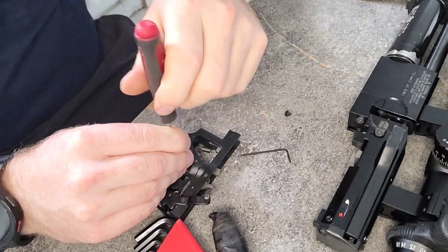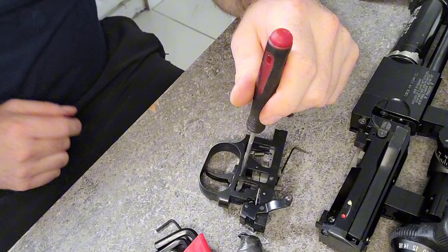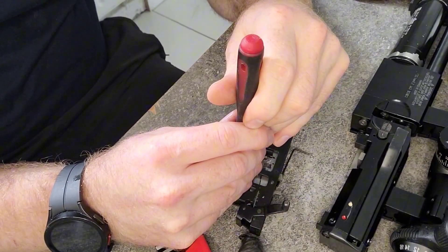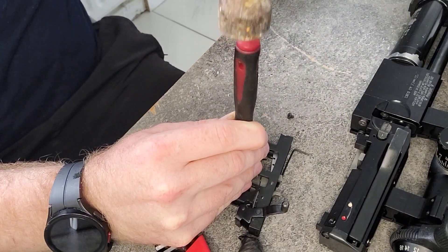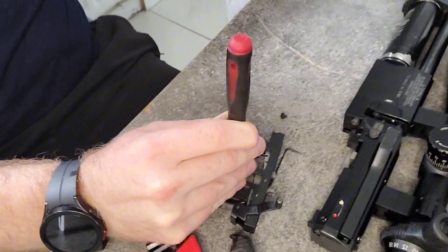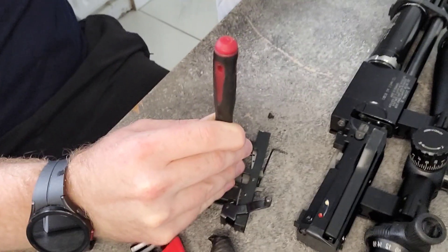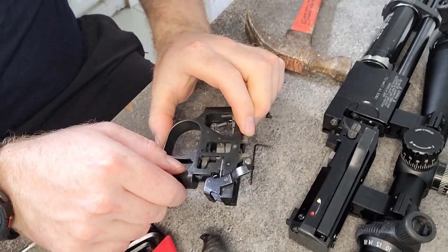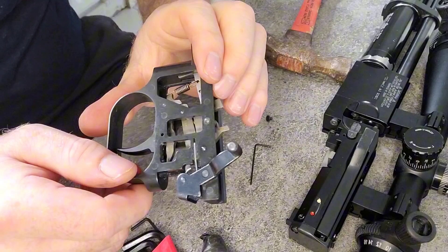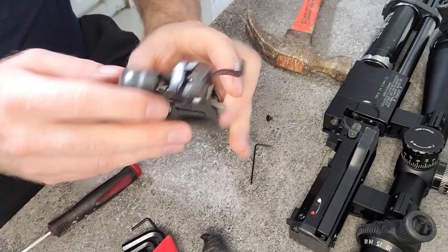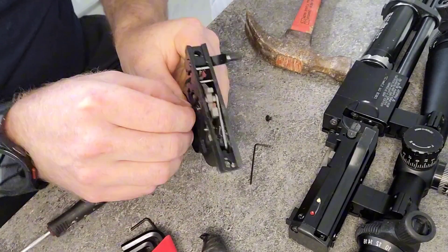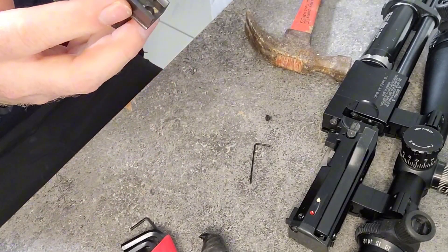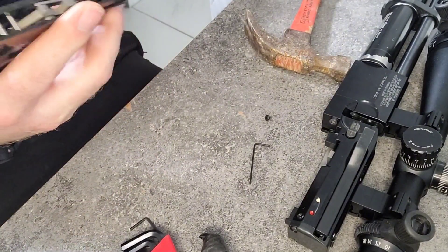Two grub screws - there's one in the middle that will set the second stage and one at the back will set the first stage. But mine seem to be loctited in, so I'm just going to disassemble the trigger unit here. Let's just take out that pin there, just a punch and a hammer and just give it a couple of light taps. Put a bit of wood or something down and don't leave a hole in the kitchen table like I did. Punch it through, I hope my missus doesn't notice it.